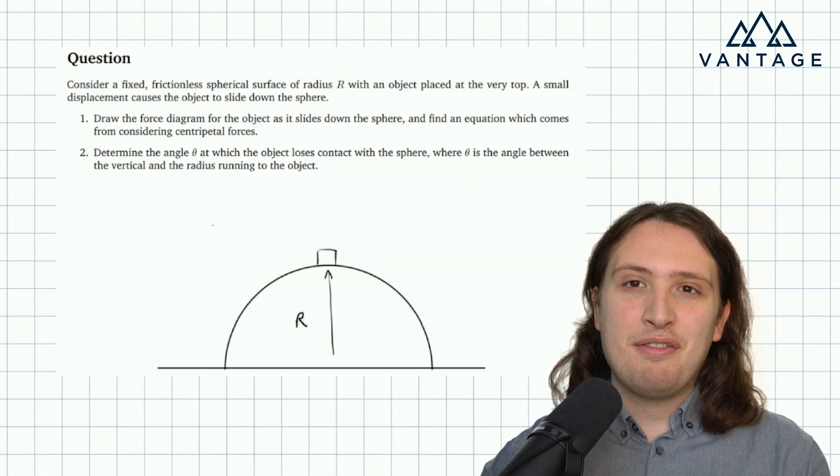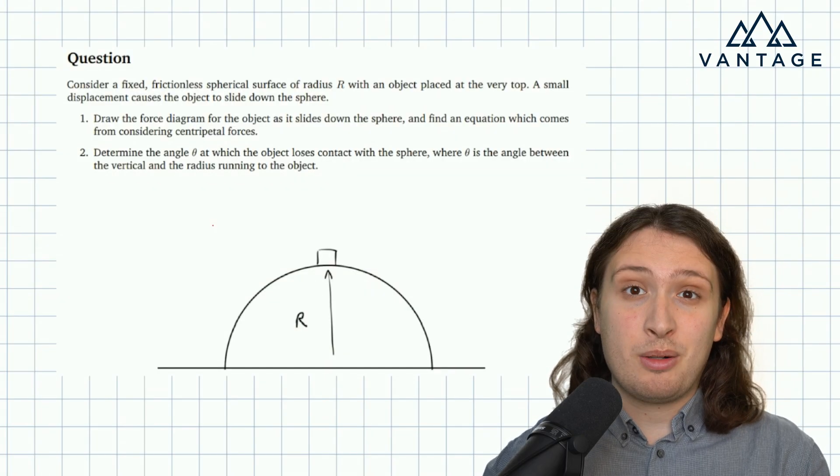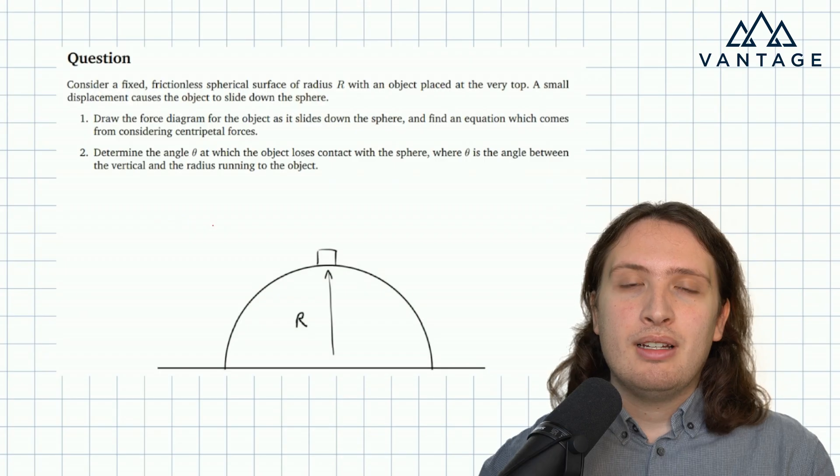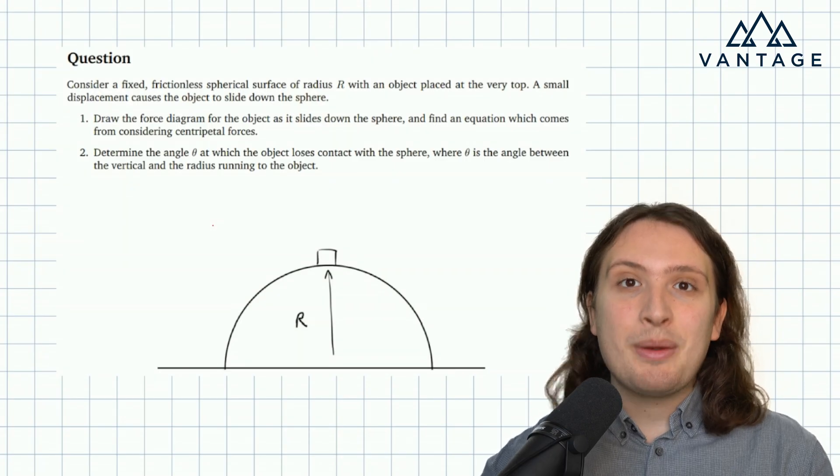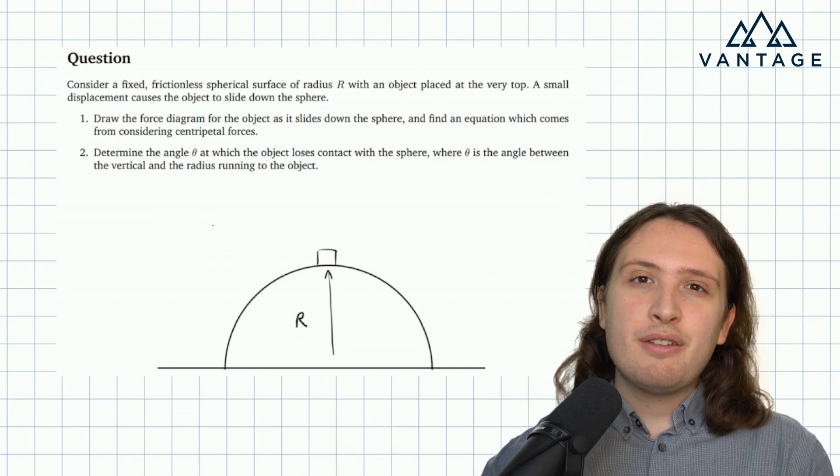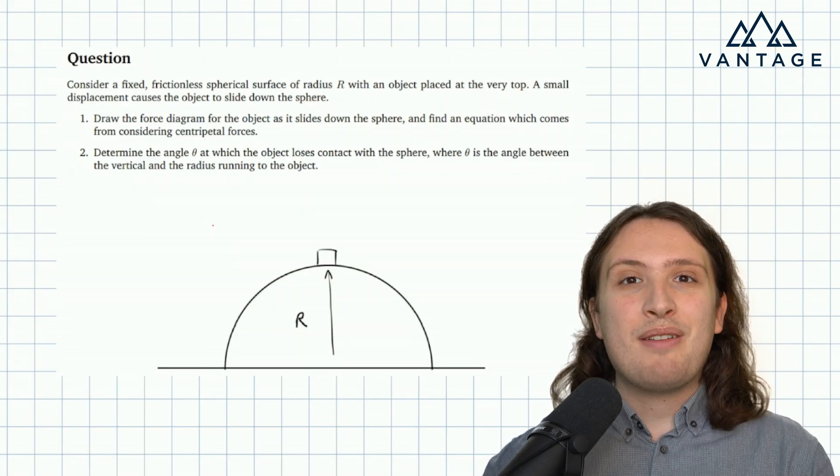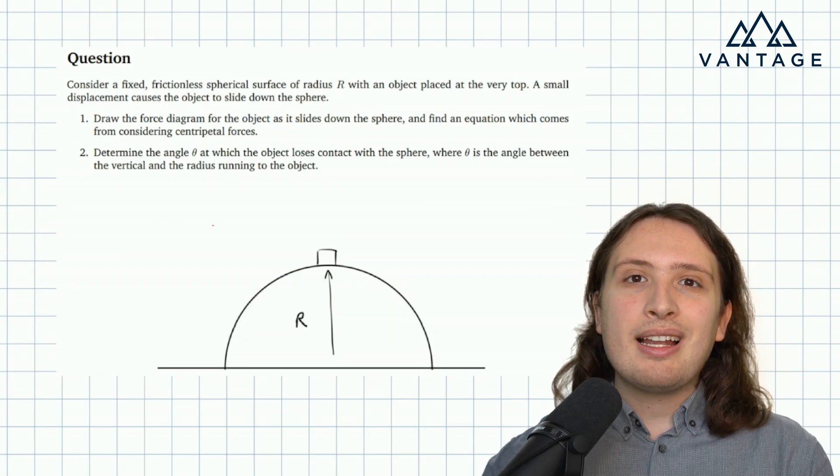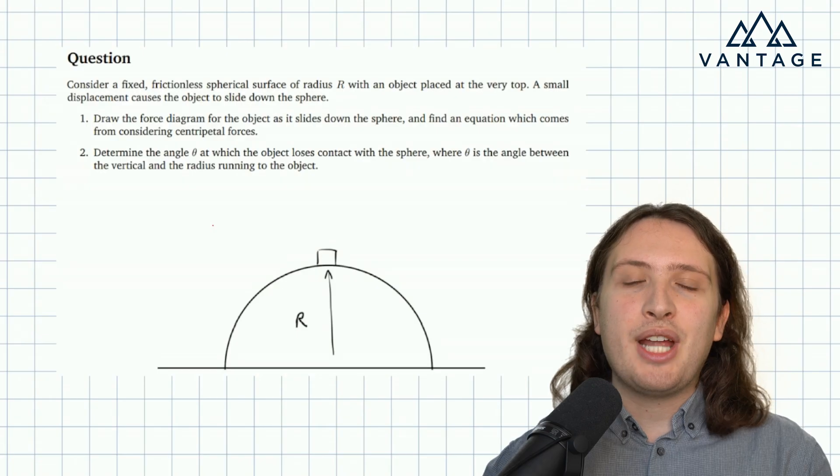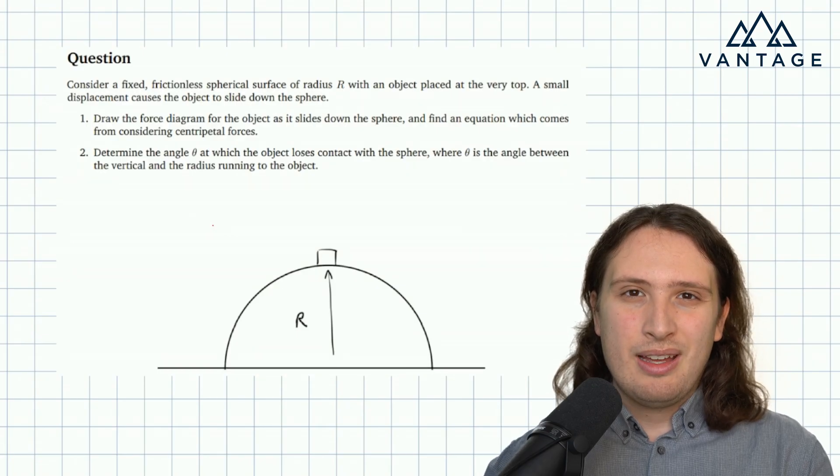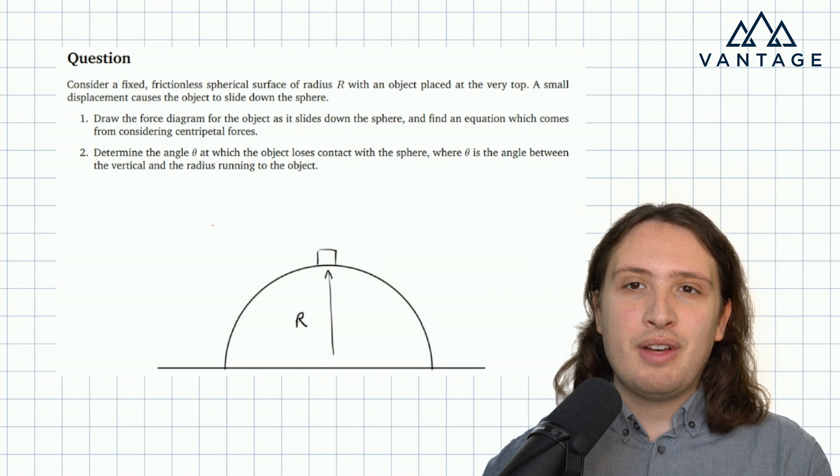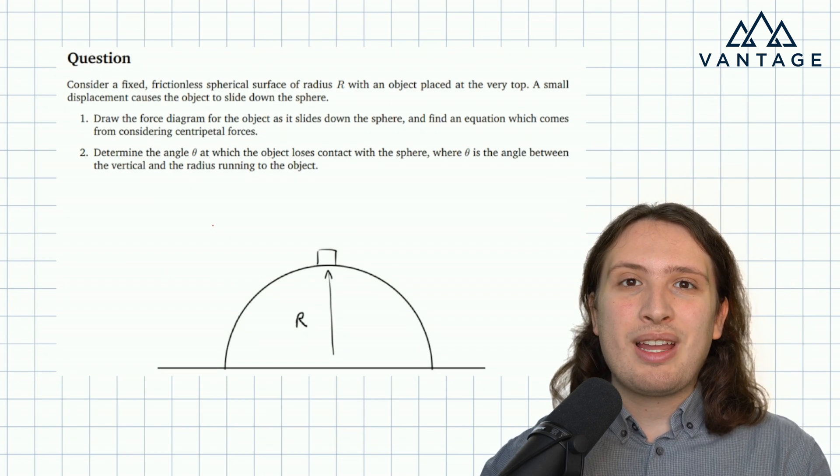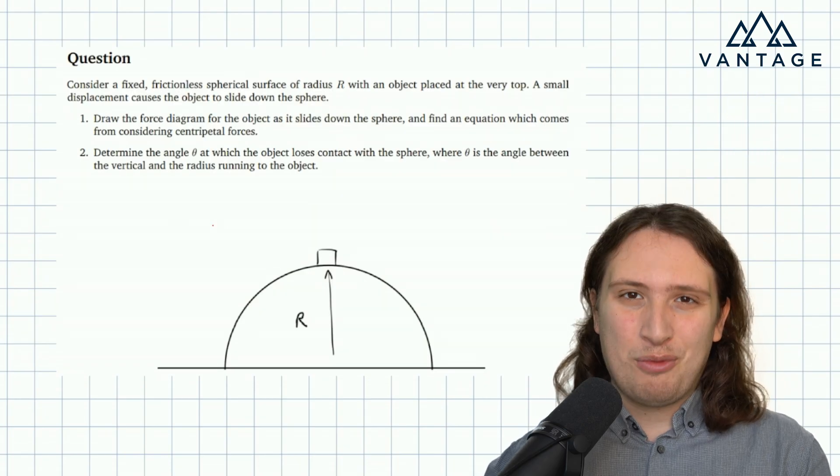In this question we're considering a fixed frictionless spherical surface, really a hemisphere, of radius r with an object placed at the very top. It's slightly displaced and so it's going to be able to slide down. So we need to first draw a force diagram, then derive an equation which comes from considering the centripetal forces, and finally think about the angle at which the object loses contact with the sphere, where the angle is measured between the vertical and the radius running to the object. I'd strongly recommend at this point that you pause the video and have a go yourself before watching on.